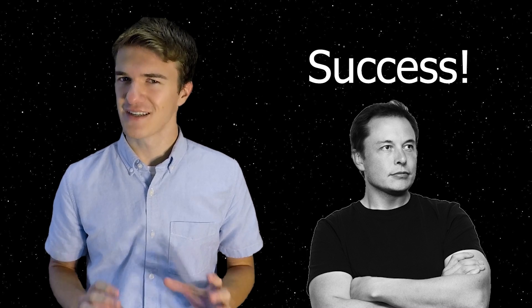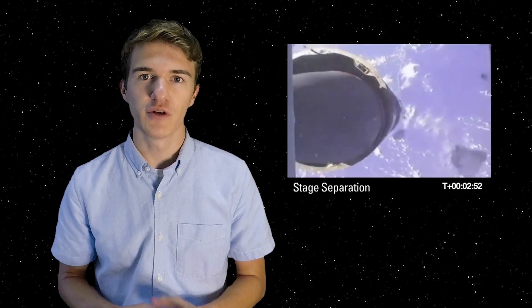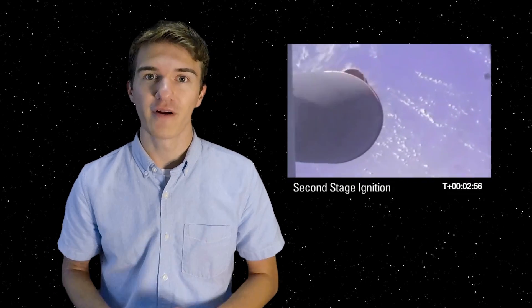However, Musk and SpaceX saw this launch as somewhat of a success. This is because they received a lot of information regarding the flight of Falcon 1, how to control it, as well as what ways they can improve upon it for the next launch. Therefore, they knew that they had to get the stage separation to work perfectly in order to possibly achieve orbit on the very next launch.